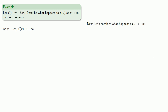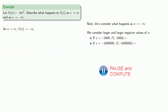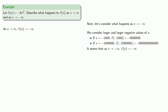Next, let's consider what happens as x → −∞. We consider larger and larger negative values of x, such as x = −1,000 or x = −1,000,000, and we find these values. It seems that as x → −∞, f(x) also goes to −∞.